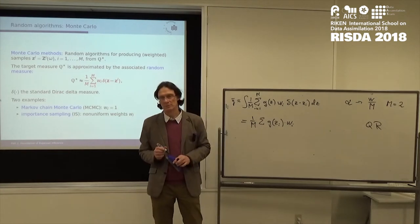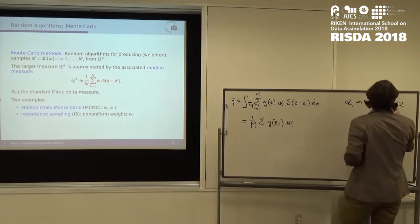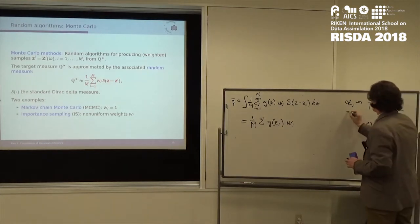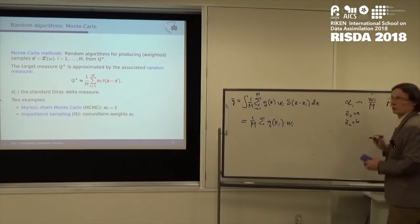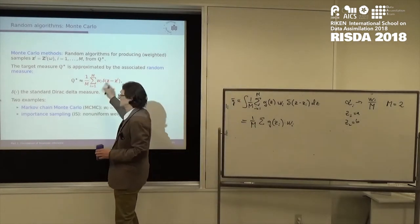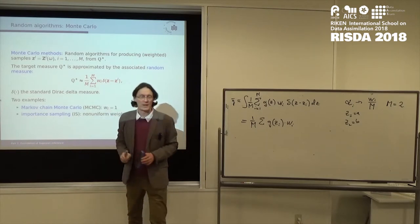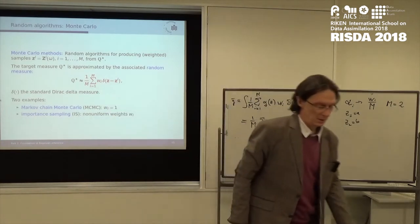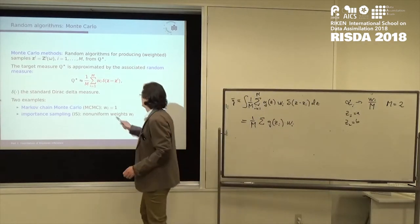So this is exactly the same as 1 over M, the sum G ZI times WI. That's the exact integral, right, because of the property that this Dirac-Delta has. And that looks like a quadrature now, right, so with this, so if I said M equal to 2, and Z1 would be A, Z2 equal to B, I'm back to the trapezoidal rule. So Monte Carlo is nothing else than generalizing this idea and saying I choose these points randomly and I give them some weights so that everything is consistent.